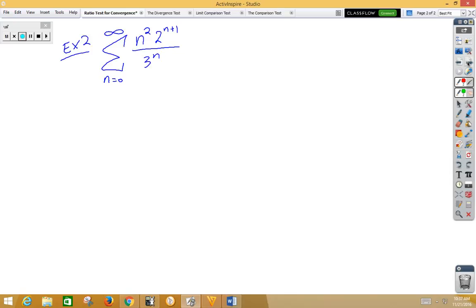So replace all n's with n plus 1. So we have n plus 1 squared 2 to the n plus 1 plus 1 over 3 to the n plus 1 over the original n squared 2 to the n plus 1 over 3 to the n. And we're taking the limit as n approaches infinity. And of course, that is rho.